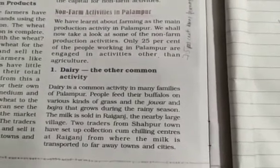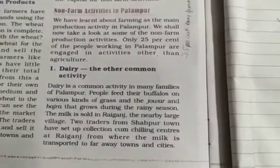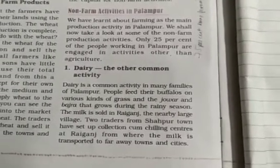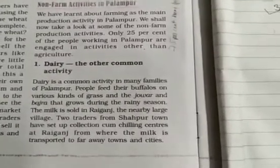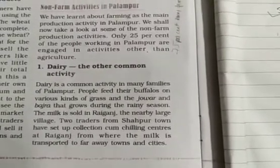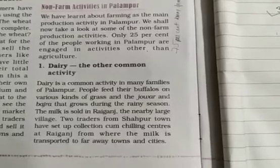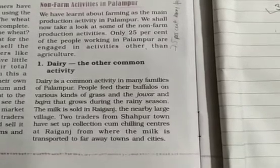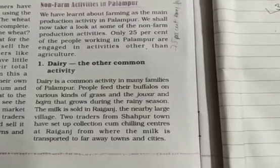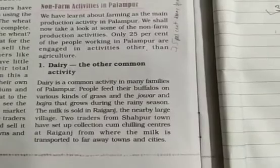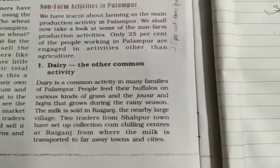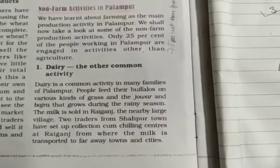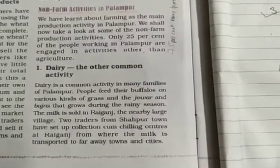The milk is sold in Raiganj, the nearby large village. Two traders from Saapur town have set up collection-cum-chilling centers at Raiganj, from where the milk is transported to far-away towns and cities.